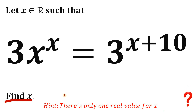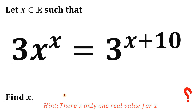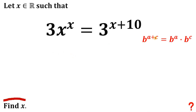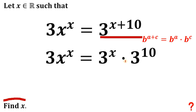Let's see if you got the correct answer. We have a real number x that satisfies 3 times x raised to the power of x equals 3 raised to the power of x plus 10. To answer this kind of question, we will use some laws of exponents. If we have b raised to the power of a plus c, we can rewrite this as b raised to the power of a multiplied by b raised to the power of c. So we can rewrite the right-hand side as 3 raised to the power of x times 3 raised to the power of 10.